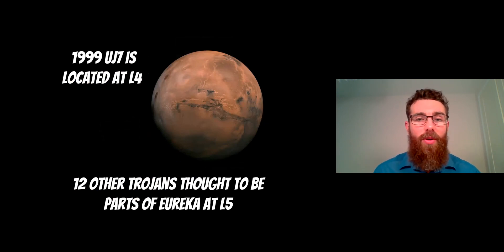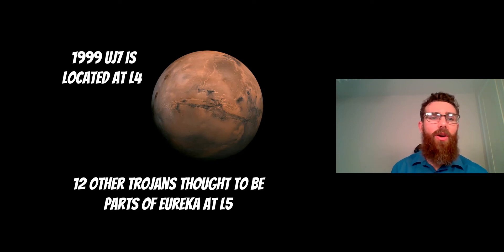Other planets have them as well. Saturn's quite large, Jupiter's quite large. Mars is not very large and it does have Trojan moons. It's got one at the L4, which is 1999 UJ7. And then at the L5, there's a collection and about 12 of them are thought to be parts of the larger one, Eureka. So it's possibly one object that's broken up and has then populated the L5 Lagrange point. Smaller planets can still have them.